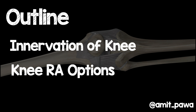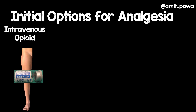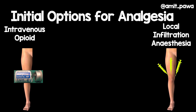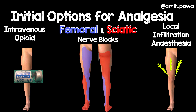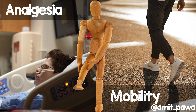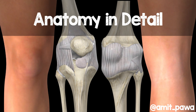I'm going to cover innervation of the knee and knee regional anesthesia options. When I first started performing anesthesia for knee arthroplasty, it wasn't unusual to just use intravenous opioid and surgical administered local infiltration anesthesia. But some surgeons were happy for me to do whatever I wanted, so we used to perform femoral and sciatic nerve blocks. We got great patient results — patients were comfortable and pain-free — but they were stuck in bed, with such dense anesthesia of their legs that they weren't able to mobilize safely. We need to optimize analgesia whilst maintaining mobility, and understanding the anatomy in more detail will help us do that.